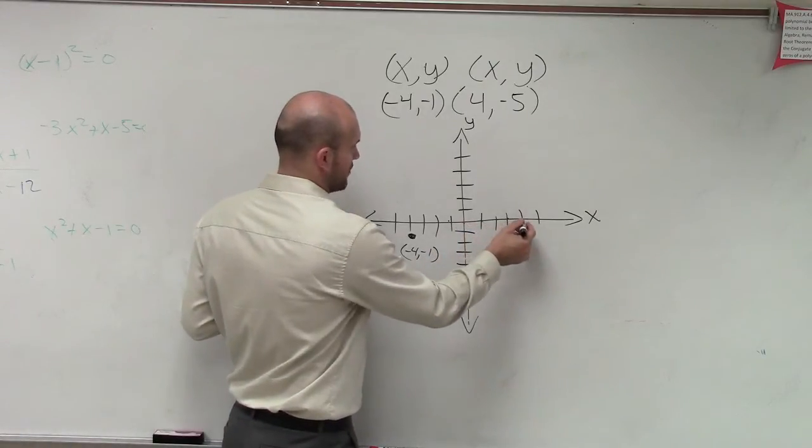So let's plot the two points. So I plotted negative 4, 1. And then let's plot the point 4, negative 5. 1, 2, 3, 4, down 5. 1, 2, 3, 4, 5. Try to make it as exact as I can. So that's 4, comma, negative 5.